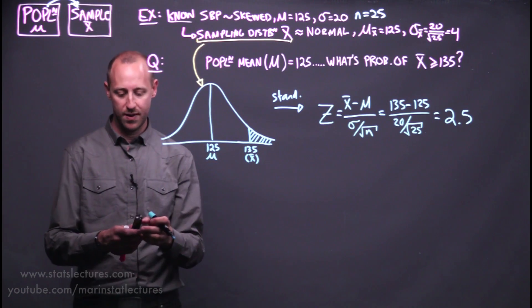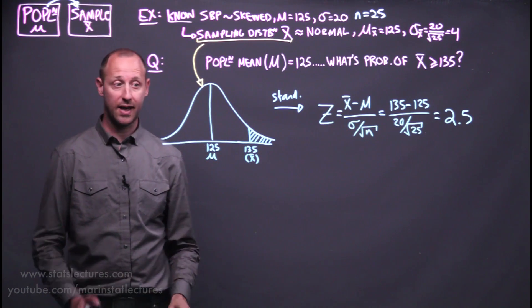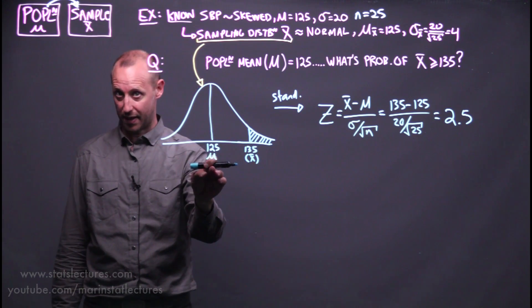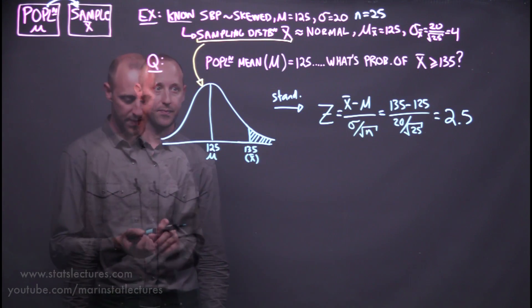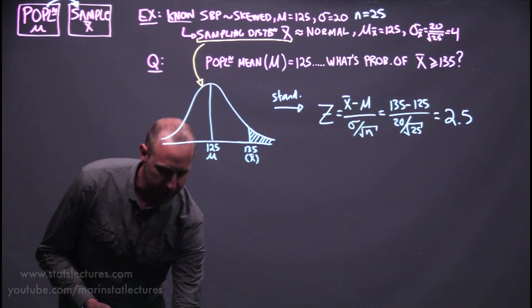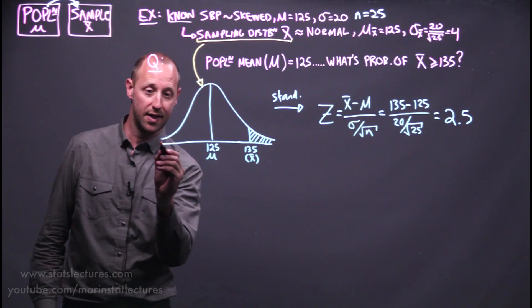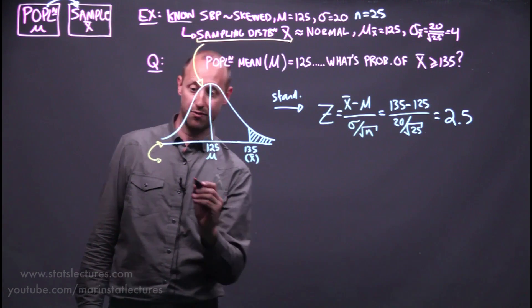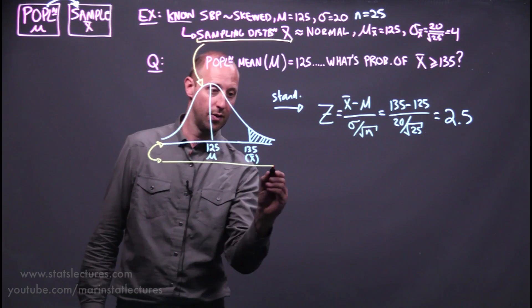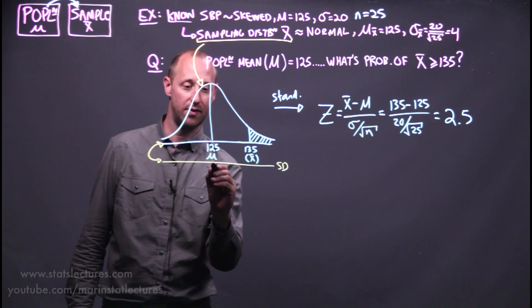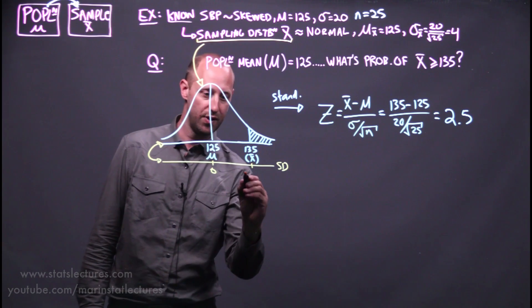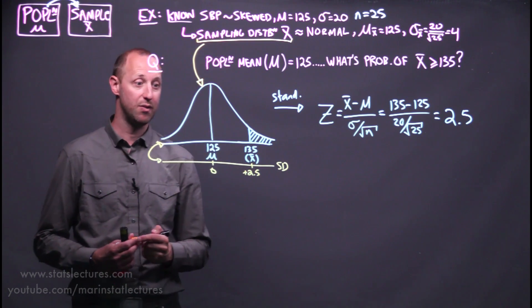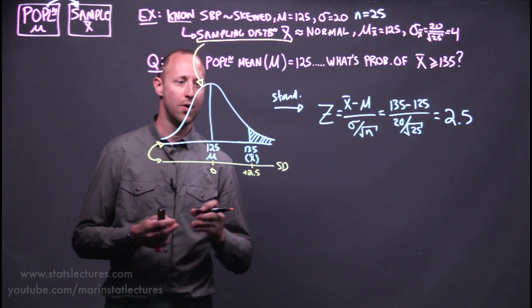So getting a sample mean of 135 is getting an estimate that's 2.5 standard deviations of the mean above what we'd expect, the population. We learned that we can think of this standardizing as just being a unit conversion. Rather than looking at units of blood pressure, we're looking at units of standard deviation. So this 135 is 2.5 standard deviations of the mean above the mean.